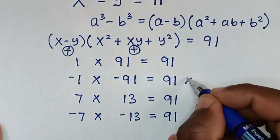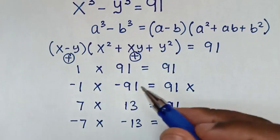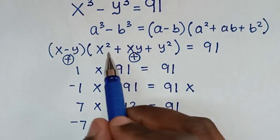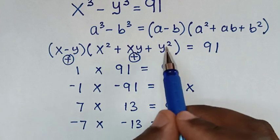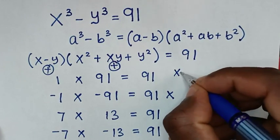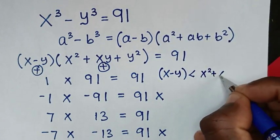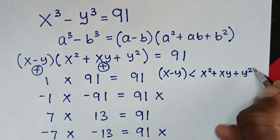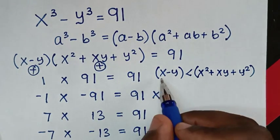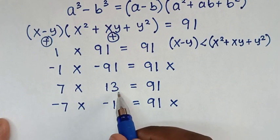Also from here, x square plus xy plus y square — because x square and y square are present — means the sum of this expression is greater than the difference x minus y. So the other condition is: x minus y is less than x square plus xy plus y square. As you can see, 91 is greater than 1, and 13 is greater than 7. So it cannot be 91 times 1 — that condition is not possible — and the other condition with 13 is possible.